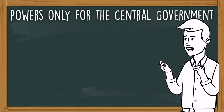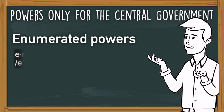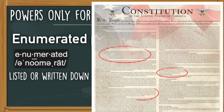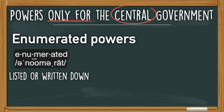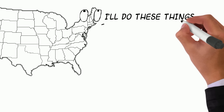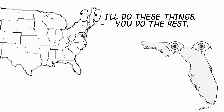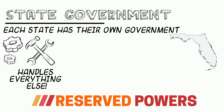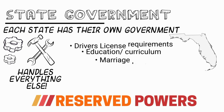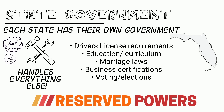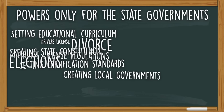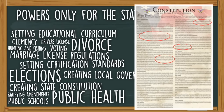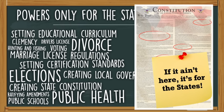Powers dedicated only to the central government are called enumerated powers — enumerated essentially means they're listed or written down somewhere, that being the Constitution of the United States. Because a power is written there, it belongs to the central government and no one else. But aside from these major responsibilities, the central government is much less concerned with everything else, leaving the majority of responsibilities for the state governments to handle. Powers that are only for state governments are known as reserved powers. If it's not written in the Constitution, it's saved or reserved for the states.